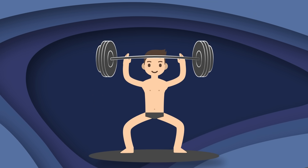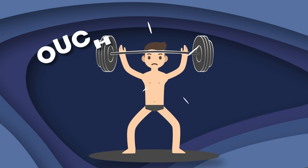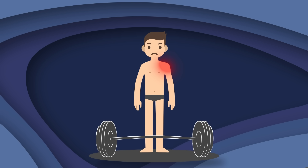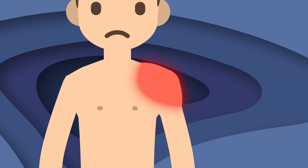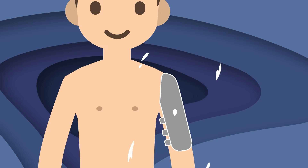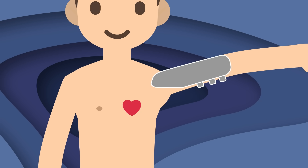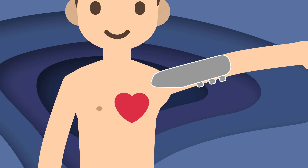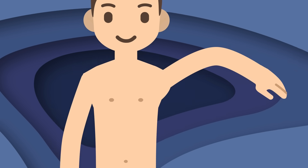First you should rest and avoid using the affected muscle. Applying ice to the area to reduce swelling to the pull. A compression bandage helps with swelling and provides support. Elevate the injured area above your heart as a helpful resort.